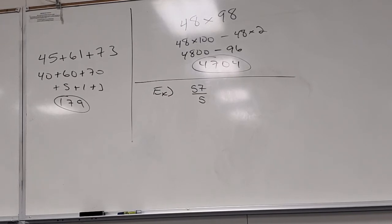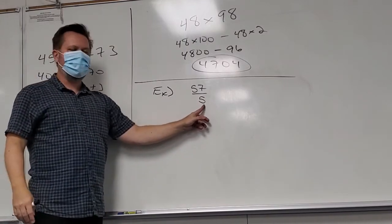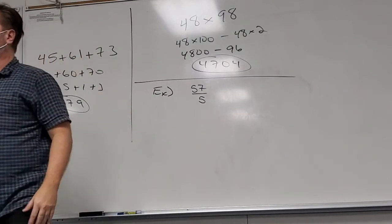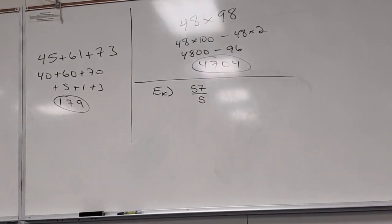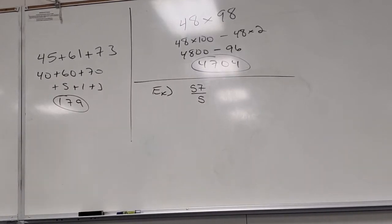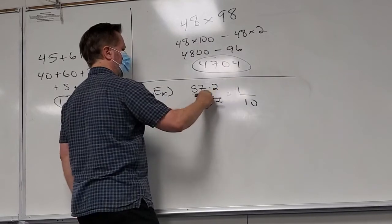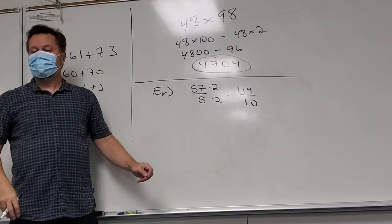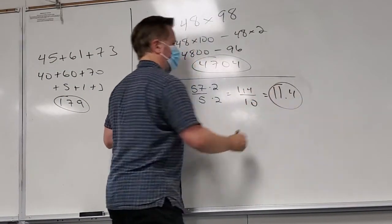So for example: 57 divided by 5. Multiply numerator and denominator by 2: you get 114 divided by 10, which is 11.4. That's much easier than long division by five. Double the numerator, divide by 10 — just move the decimal. Similarly, 11 divided by 5: double to get 22, divided by 10 is 2.2.